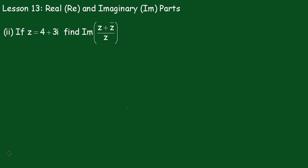Part 2. If Z equals 4 plus 3i, find the imaginary part of Z plus Z conjugate over Z.